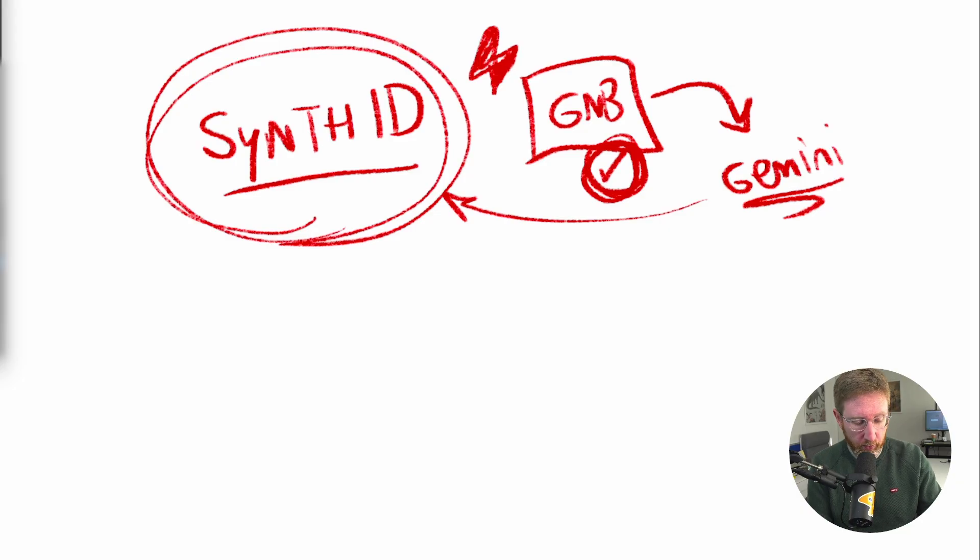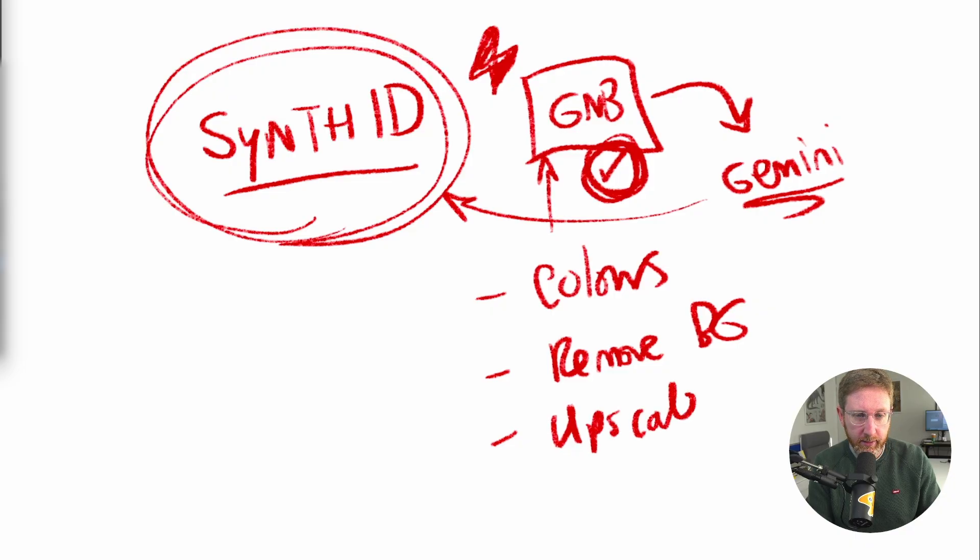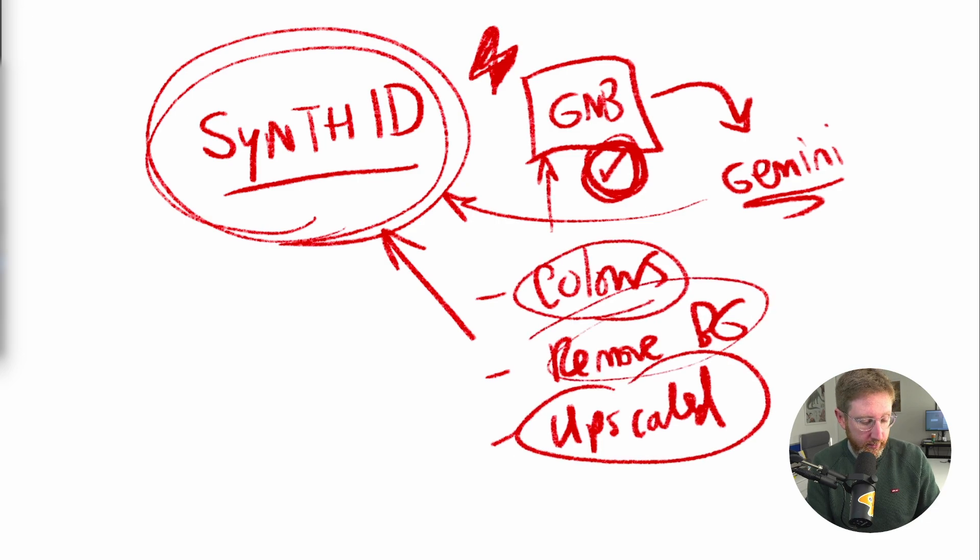Now this is the case with the original generated image from Nano Banana Pro. Also when you edit that image, so I've done edits such as changing the colors, I've removed backgrounds, I've upscaled, and this watermark, this Synth ID is there, is still detectable after all these different steps. So this Synth ID, this watermark is definitely embedded in such a way that significant editing doesn't change the fact that Google can still detect it.